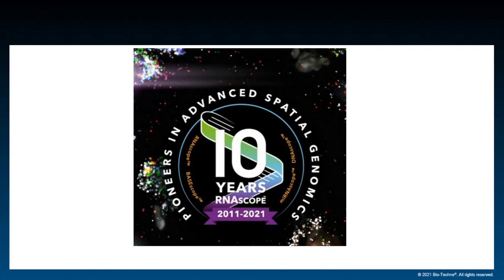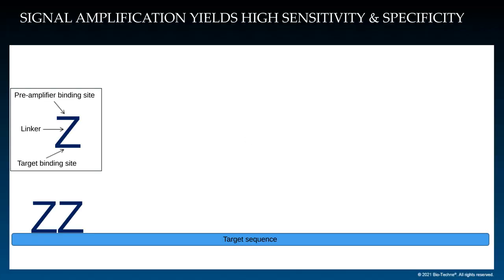RNA scope technology has been around for a decade now, providing high quality spatial analysis solutions to look at target RNA biomarkers. The key to our technology is our probe design strategy. We depict a standard RNA scope probe as a Z molecule, which has three different regions: the target binding site, which has a sequence complementary to your target; the preamplifier binding site, which forms the foundation for building the amplification tree; and a linker region connecting these two sequences. We design our probes in pairs, such that when applied to tissue, the probe binds as a pair of Zs onto your target sequence.